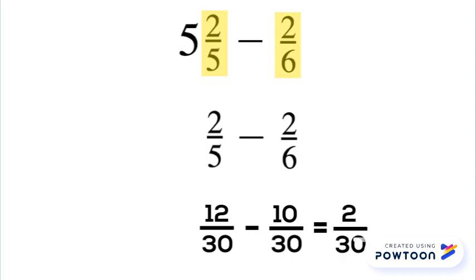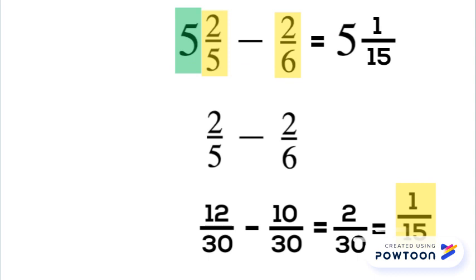Now we can subtract 12 minus 10, and we get 2 thirtieths. 2 and 30 are both even, so we can divide them by 2 and reduce this to 1 fifteenth. Now, we can't forget about the whole number 5, so we're going to bring that back into our answer, so our answer is 5 and 1 fifteenth.